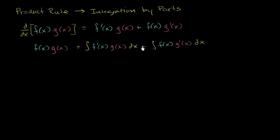Now what I want to do is solve for this part right over here. And to solve for that, I just have to subtract this business from both sides. And then I am left with f of x times g of x minus the antiderivative of f prime of x g of x dx.